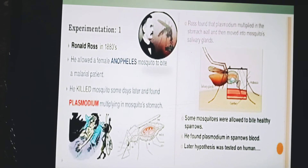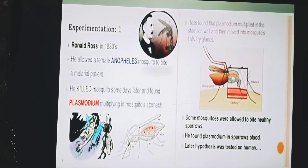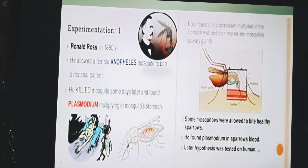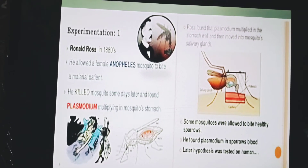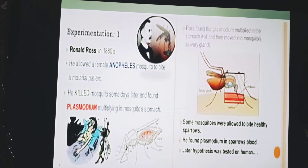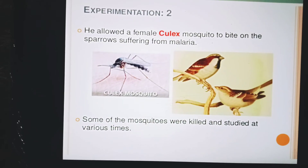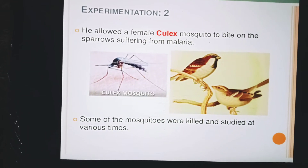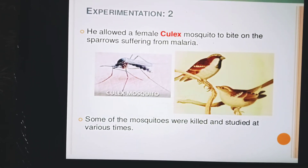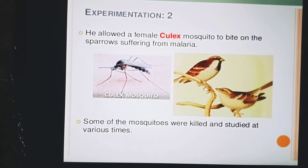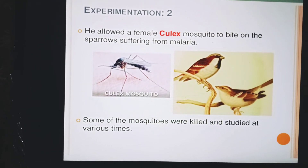The next logical experiment was to allow an infected mosquito having plasmodium to bite a healthy person. If the hypothesis was true, the healthy person would have got malaria. But scientists avoid using human beings for experiments when results can be so serious. So Ross used sparrows and redesigned the experiments. He allowed a female Culex mosquito to bite sparrows suffering from malaria. Some of the mosquitoes were killed and studied at various times.